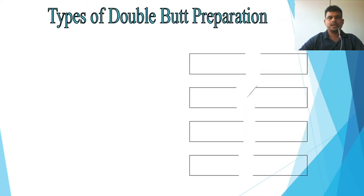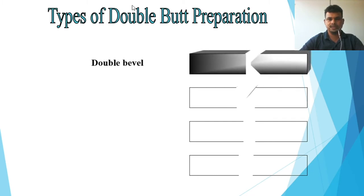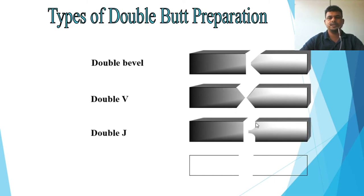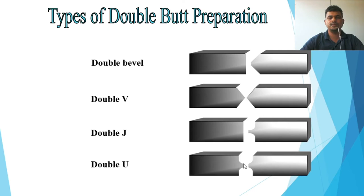Double butt preparation types include: double bevel — one side and another side both beveled; double V — a V on both sides; double J — J-shape on both sides; and double U, or W shape. These are all the double butt preparation types.